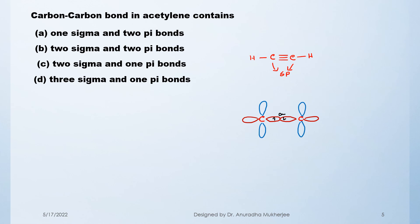Each carbon also has unhybridized p orbitals. The py orbitals each have one electron and overlap in parallel, forming one pi bond. Each carbon also has a pz orbital with one unpaired electron; these overlap to form another pi bond. That means in the acetylene molecule, between the two carbon atoms there is one sigma bond and two pi bonds.